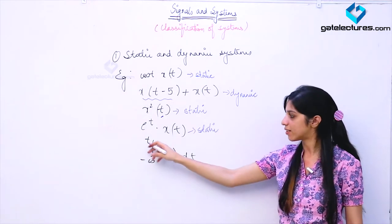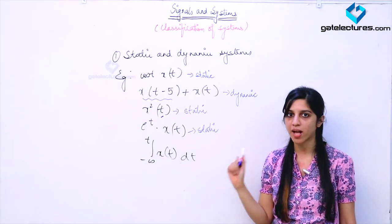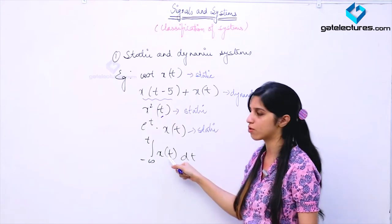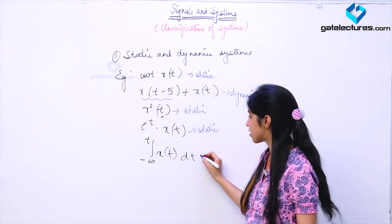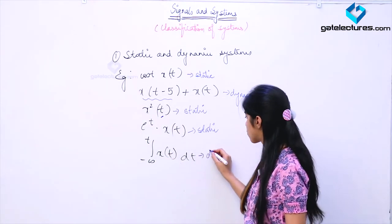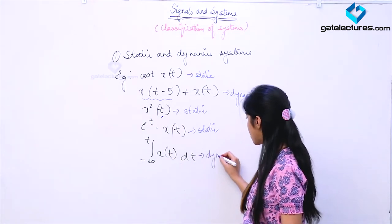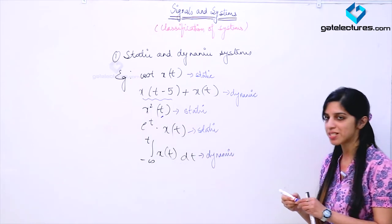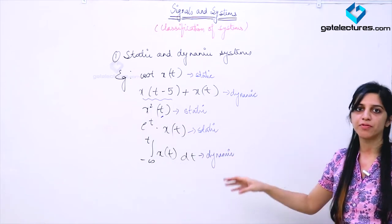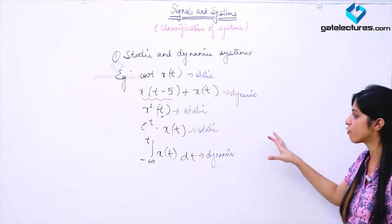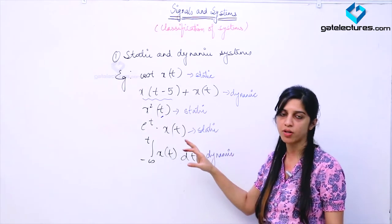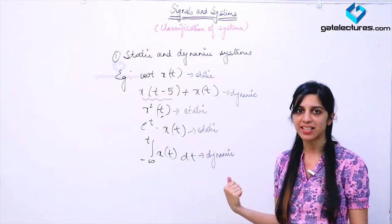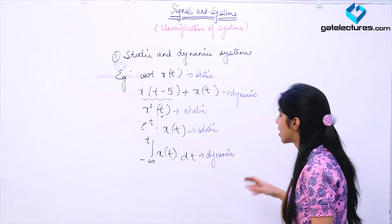This integrator is a dynamic system, because you need all the past values of the input to calculate the present output. So this is also going to be a dynamic system. Just based on which values of input the output is dependent upon, we are classifying systems as static and dynamic.